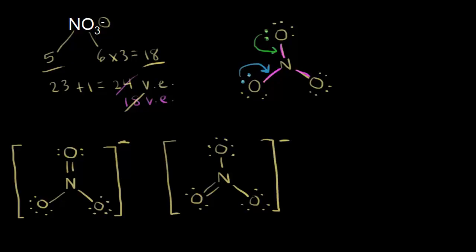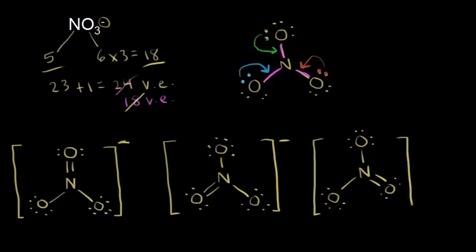Of course, we could also take a lone pair of electrons from the oxygen on the bottom right and move them in to form a double bond. Now we have nitrogen double-bonded to the bottom-right oxygen, which now has only two lone pairs. The oxygen at the top and the oxygen at the bottom left each have a single bond with three lone pairs. This is another possible dot structure. These three are considered resonance structures of each other, represented by a double-headed resonance arrow.